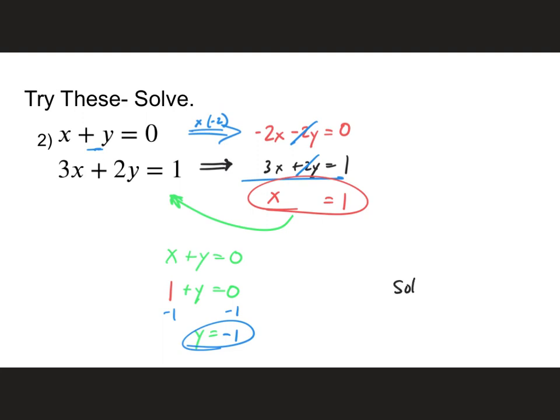So again, my solution here, now that I have it all together, is (1, −1).